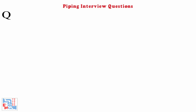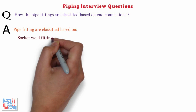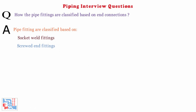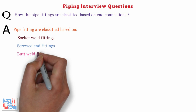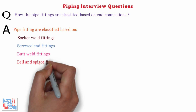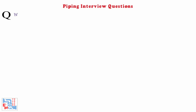Next question: how are pipe fittings classified based on end connections? Pipe fittings are classified based on socket weld fittings, screwed end fittings, butt weld fittings, and bell and spigot fittings.